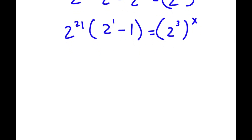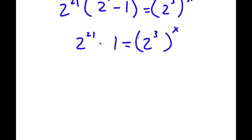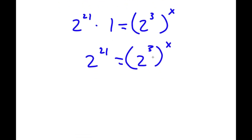Now, 2 to the power of 1 is equal to 2, and 2 minus 1 is 1. So I'm left with 2 to the power of 21 times 1 is equal to 2 to the power of 3 to the power of x. Now, anything times 1 is simply itself, so 2 to the power of 21 times 1 is simply 2 to the power of 21. So I have 2 to the power of 21 is equal to 2 to the power of 3 to the power of x.